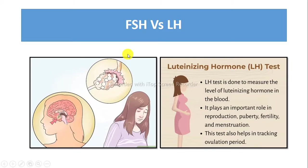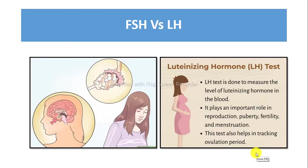FSH affects the first half of the menstrual cycle, whereas LH has an effect on both the first and second half of the menstrual cycle. These are the key differences between FSH and LH in terms of their functions, roles in primary sex organs, spermatogenesis, and the menstrual cycle.